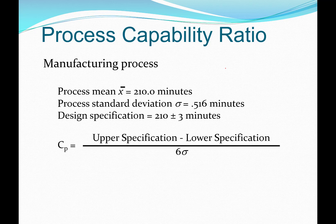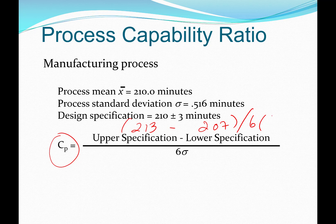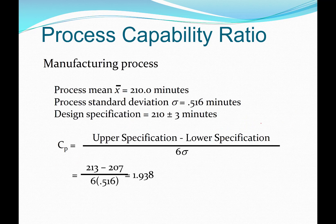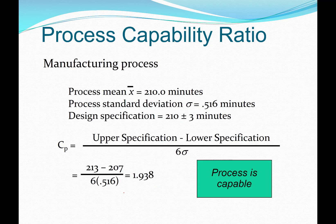Here is an example. A manufacturing process has a mean of 210 minutes, a process standard deviation of 0.516 minutes, and a design specification of 210 plus or minus 3 minutes. Computing C sub p: upper minus lower spec limit is 213 minus 207, divided by 6 times 0.516. In this case, C sub p equals 1.938, and the process is capable.